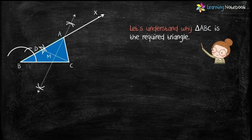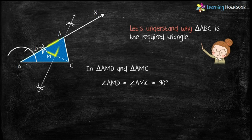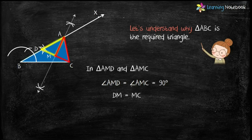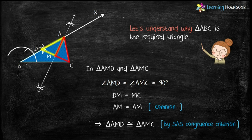Now let's understand why triangle ABC is the required triangle. In triangles AMD and AMC, angle AMD equals angle AMC, which equals 90 degrees, and DM equals MC due to the construction of the perpendicular bisector. Also, AM equals AM because it is common to both triangles. Therefore, by the SAS congruence criterion, triangle AMD is congruent to triangle AMC.